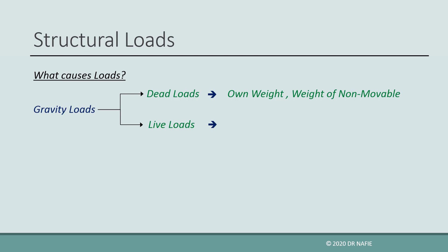Live loads, on the other hand, come from the weight of items that are movable, like cars, people, and furniture.